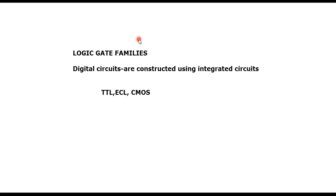Digital integrated circuits operate with binary signals and are made up of interconnected digital gates. They are most commonly used in modern digital systems because they provide certain advantages.